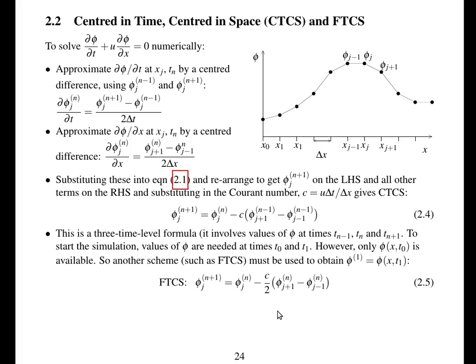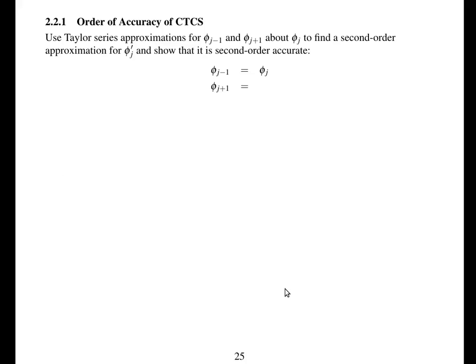For forward in time, centred in space: phi at time level n+1 equals phi at time level n, minus the Courant number divided by 2, times (phi_{j+1} minus phi_{j-1}), because the gradient is over a distance of 2*delta_x. We're now going to look at the order of accuracy of centred-in-time, centred-in-space, using Taylor series for phi_{j-1} and phi_{j+1} about phi_j.